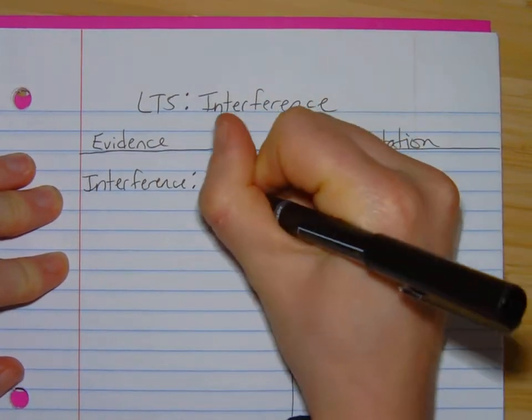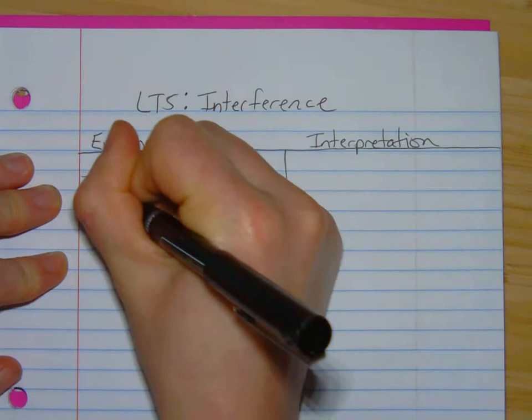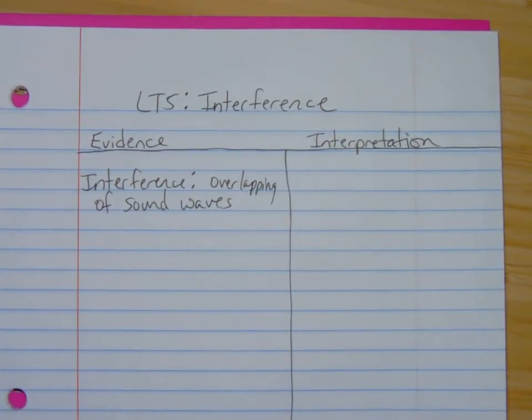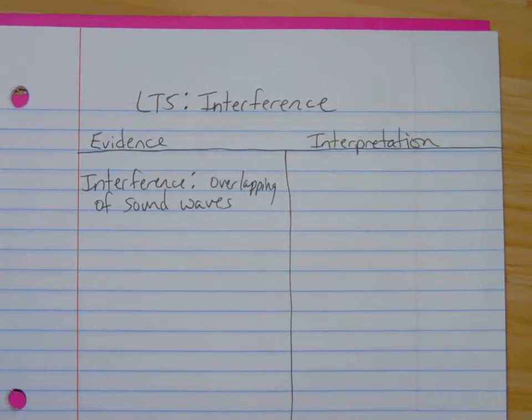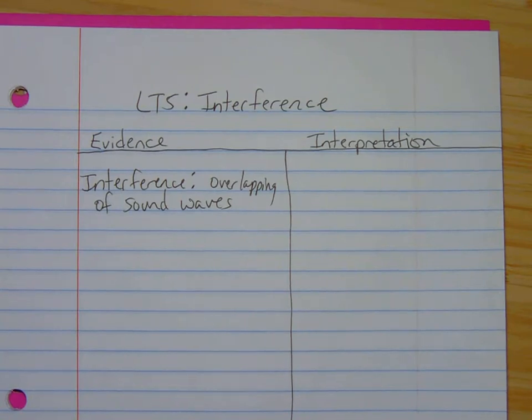Interference. It is the overlapping of sound waves. And it could be light, it's just that in this unit we're talking sound. So the overlapping of waves perhaps would be a better definition. If something is going to overlap, think about interference.